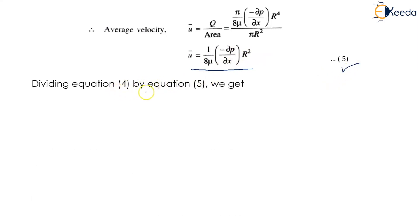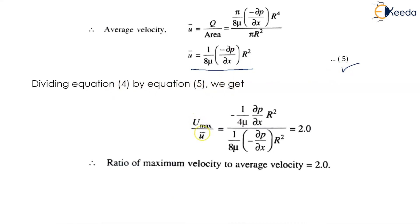Dividing equation 4 by equation 5 we get u_max upon u-bar equals minus 1 upon 4 mu into del p upon del x into R square, divided by 1 upon 8 mu into minus del p upon del x into R square. The common terms cancel, giving a final value of 2. Therefore the ratio of maximum velocity to average velocity is 2.